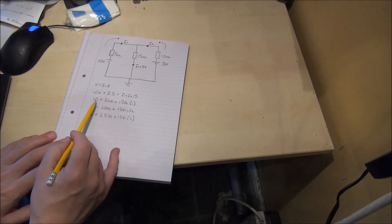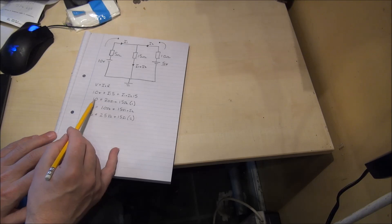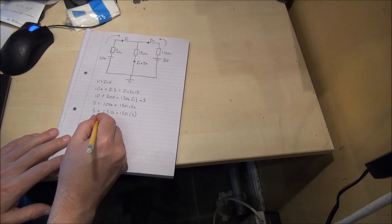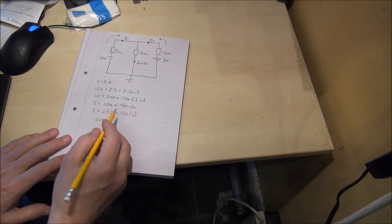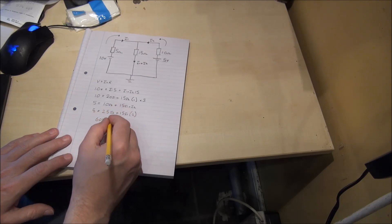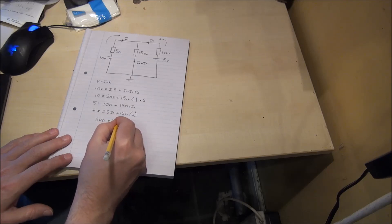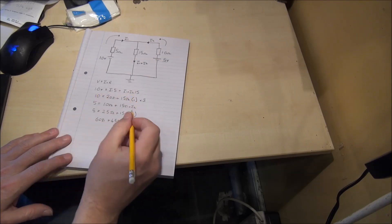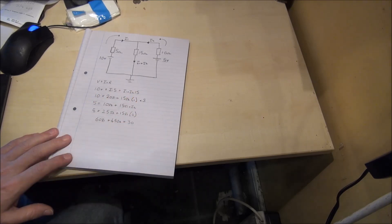I'm going to take the top term and multiply it by 3. 3 times 20 I1 is 60 I1 and 3 times 15 is plus 45 I2 is equal to 3 times 10, 30. That's the first term.